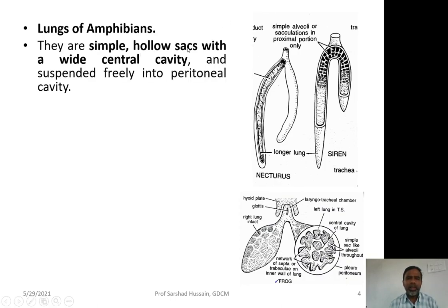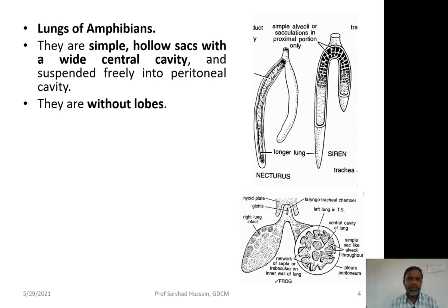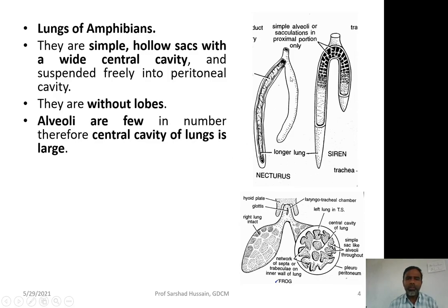Looking at the lungs of amphibians, they are very simple. They are hollow sacs with a wide central cavity, suspended freely in the peritoneal cavity — the cavity which encloses the visceral organs. These lungs are without lobes and alveoli are few in number, restricted to the anterior portion in most cases. Because alveoli are few in number, their lumen is wide and large.